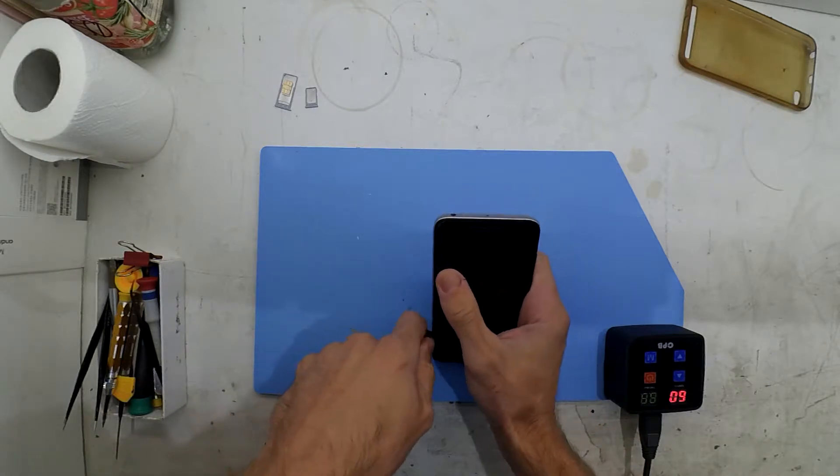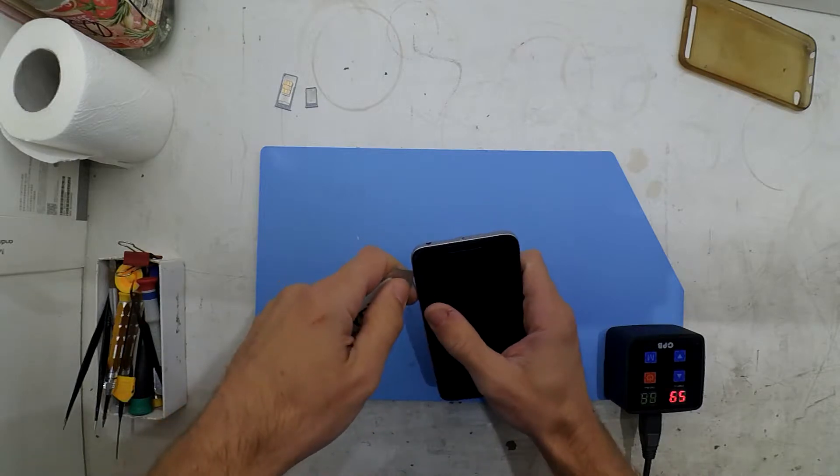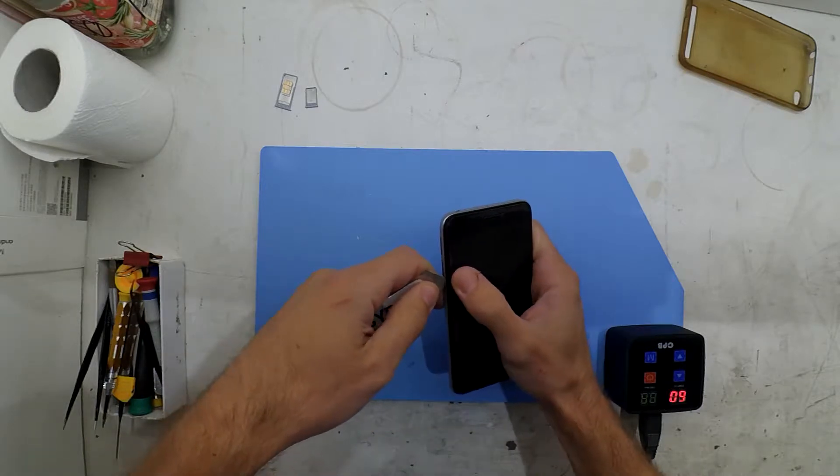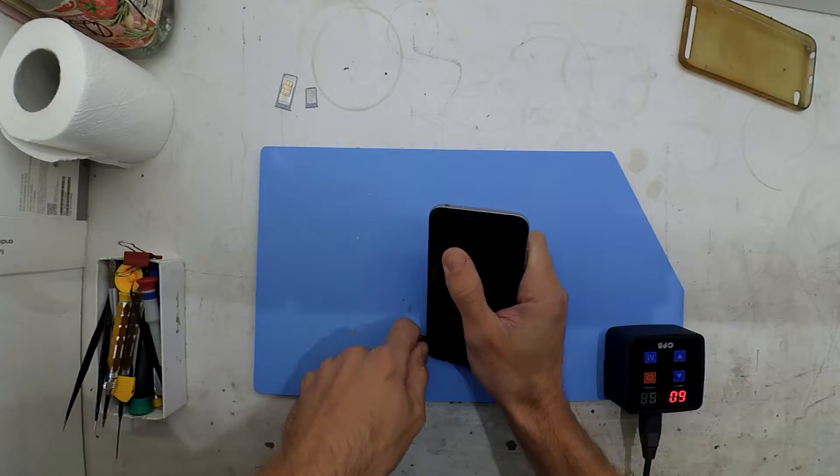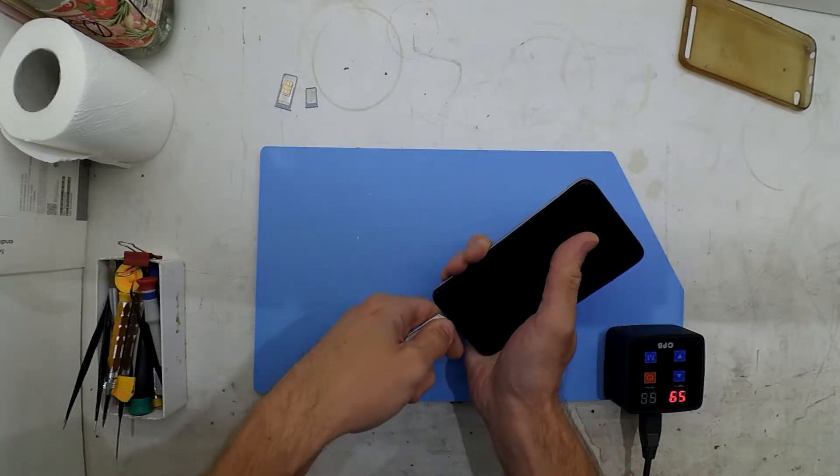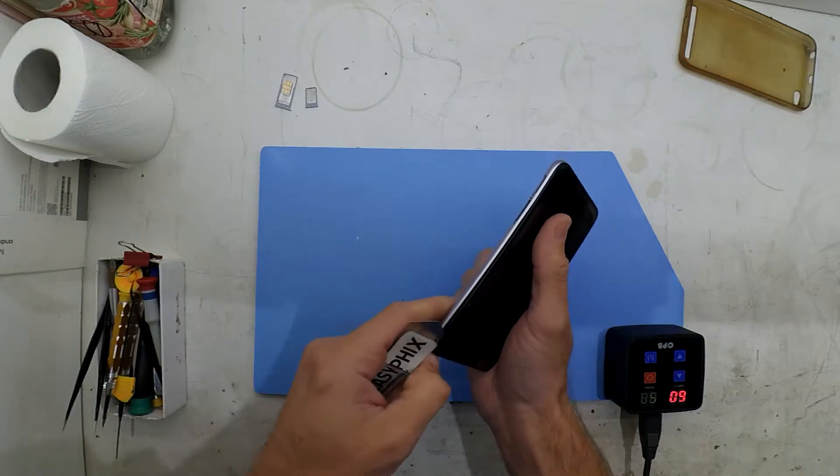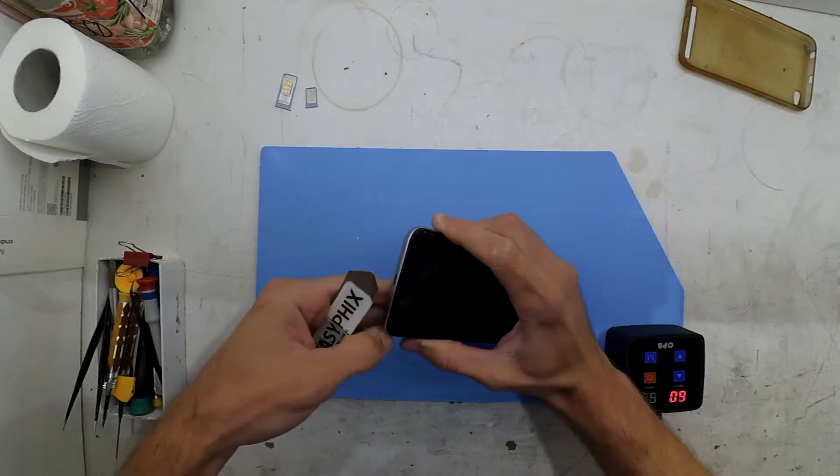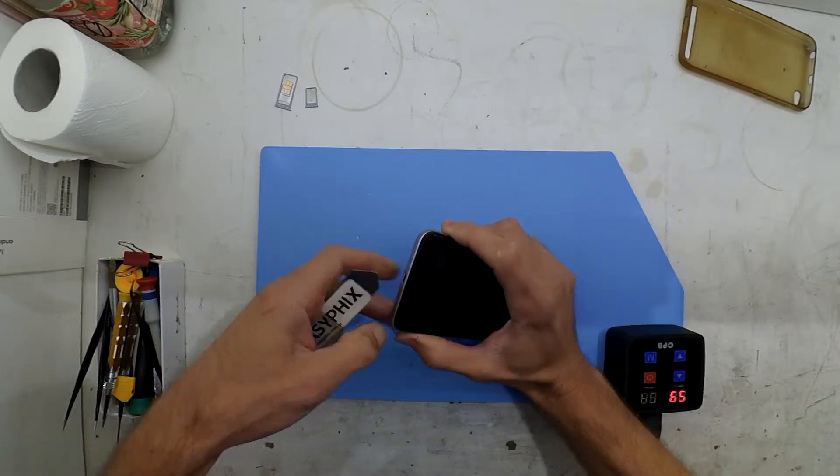I've taken out the SIM tray and the SD tray. Now I'm just using a metal pry tool to open this one up. The cheapest Xiaomi is reasonably straightforward to get open.